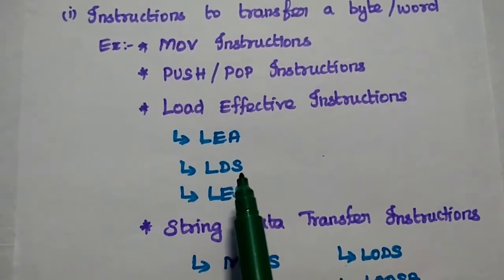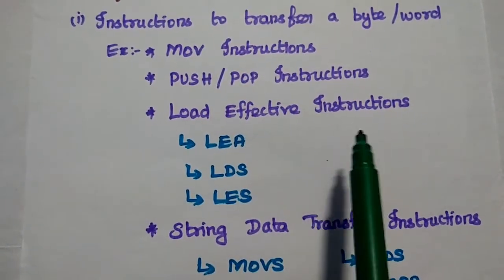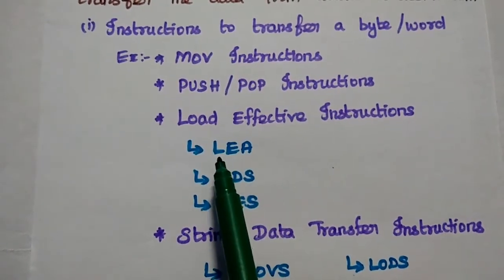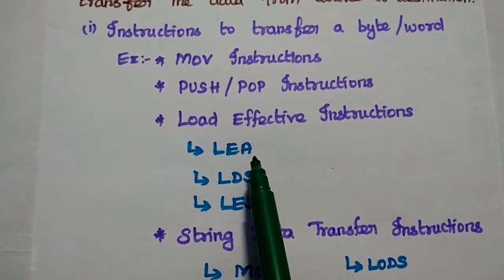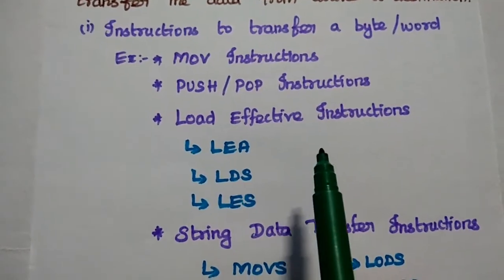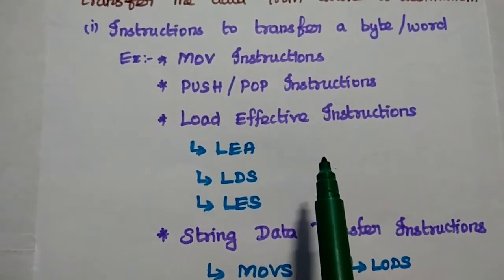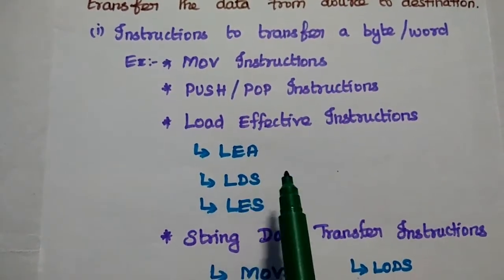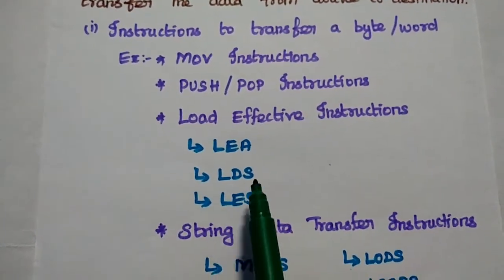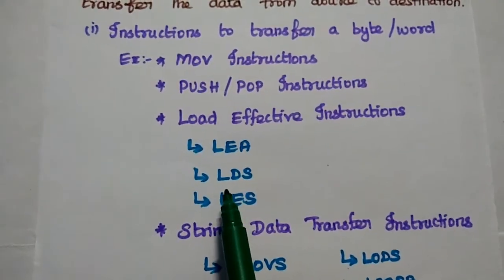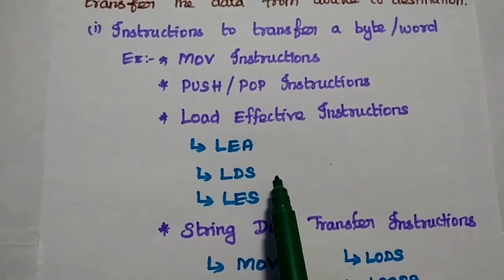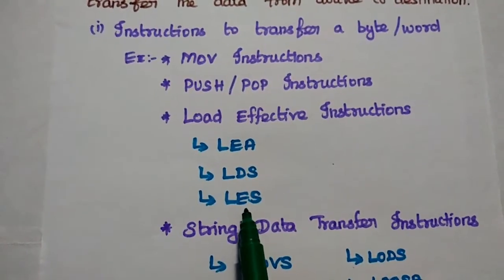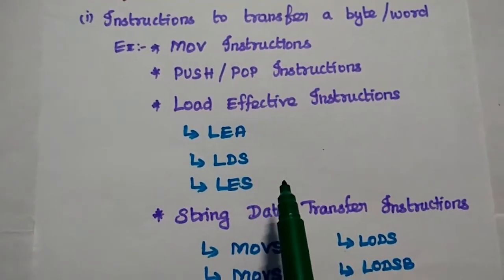Next is Load Effective Address Instructions. Here we use LEA — that is Load Effective Address into that particular address. Next is Load DS, that means Load Data Segment Register. Load ES means Load the Extra Segment Effective Register.